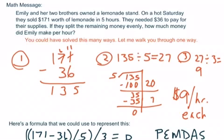Okay, so here's one way you could have solved this complicated multi-step division problem. You could have said, step one, I'm going to take the $171 worth and subtract the $36 that they paid for supplies. If you did that subtraction, you're going to see you have $135 left.